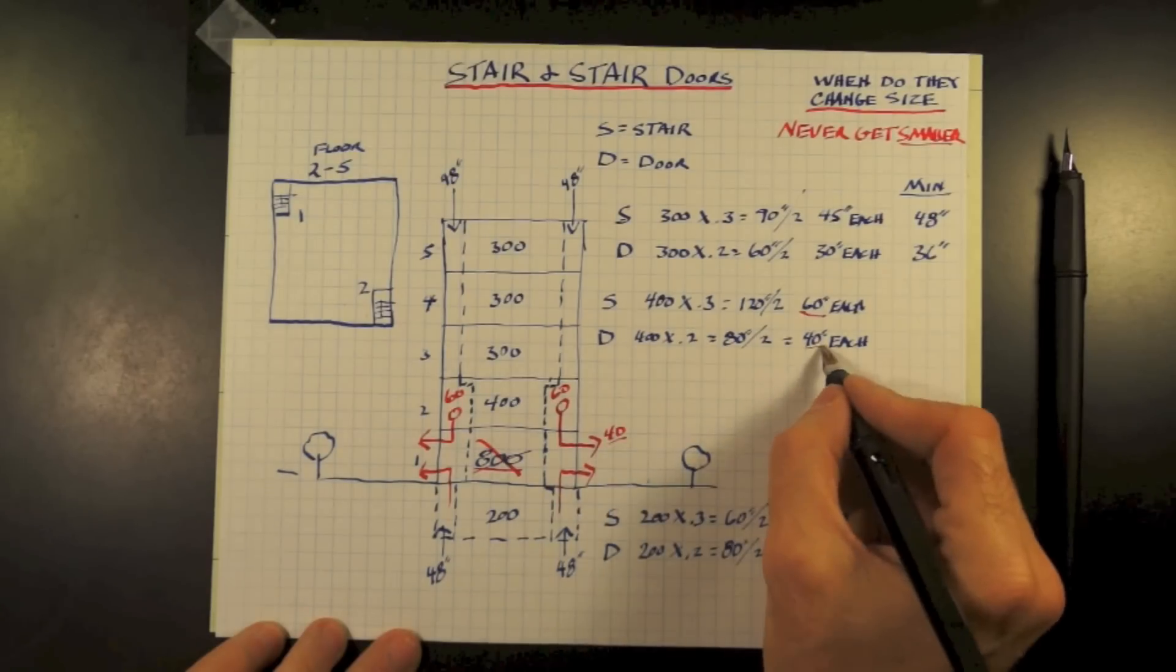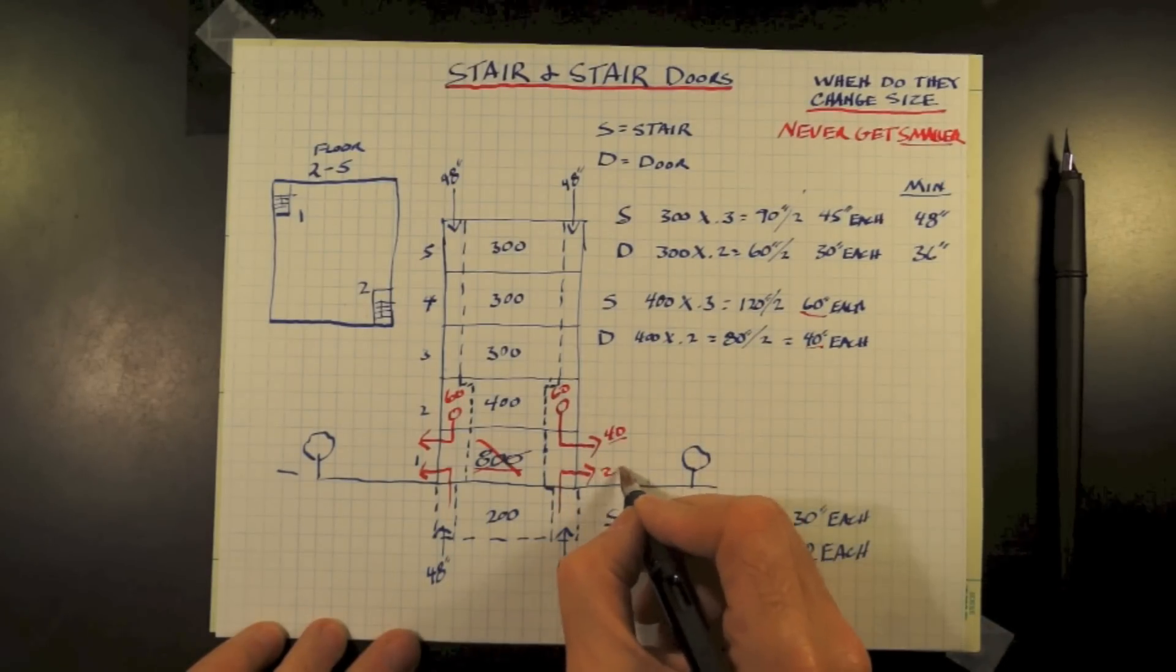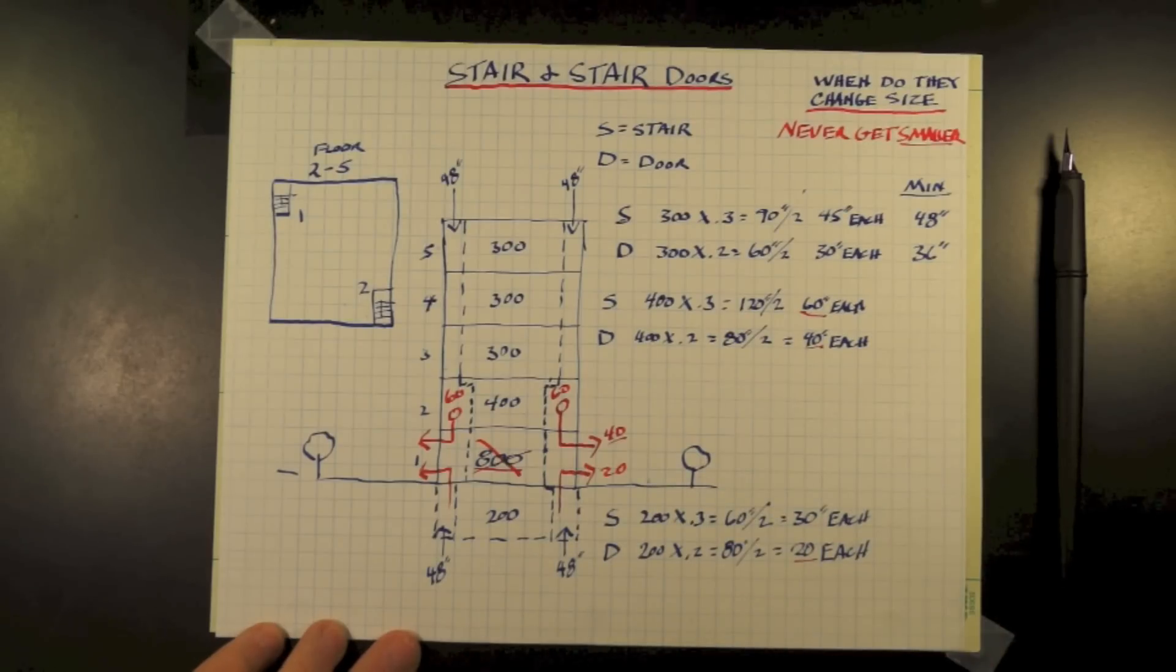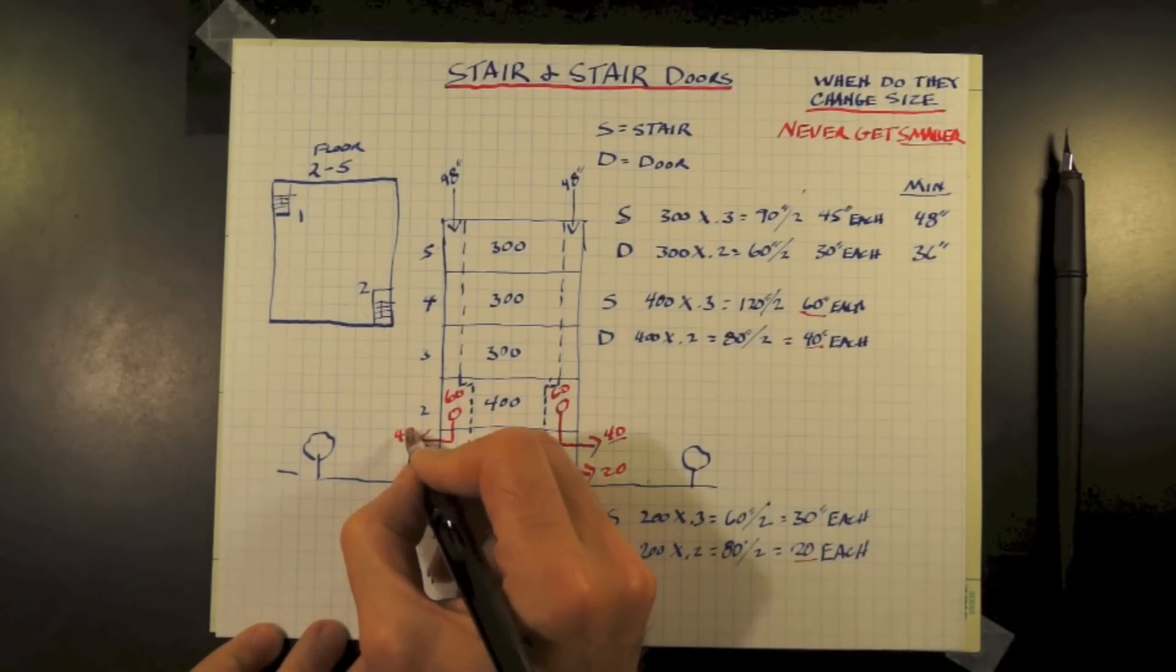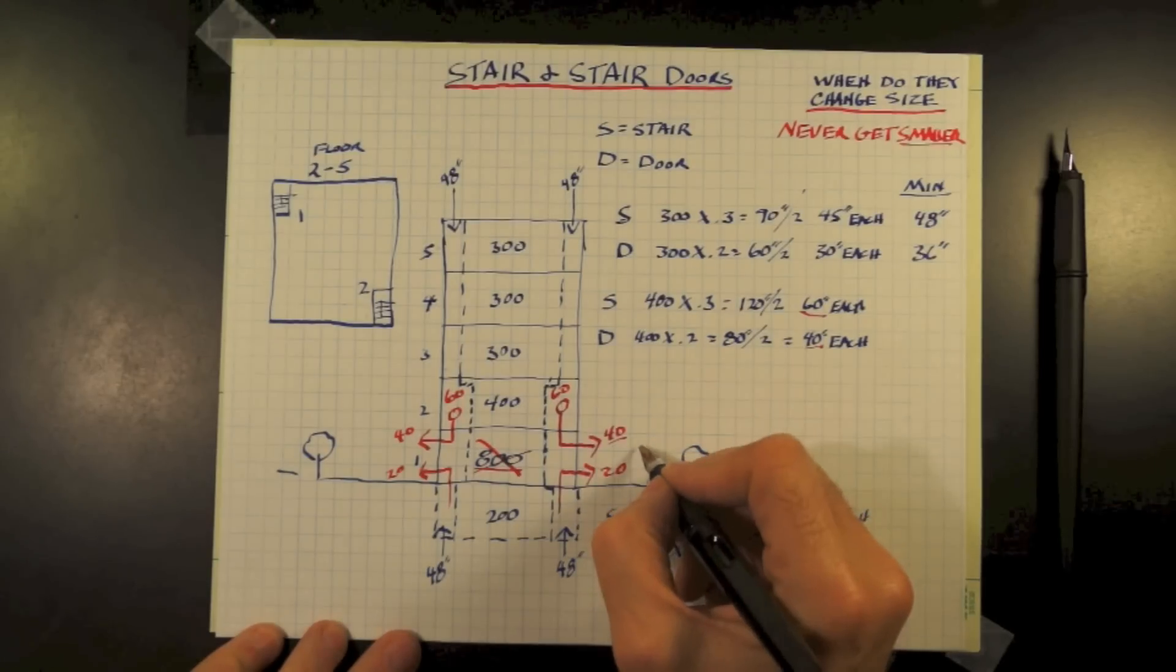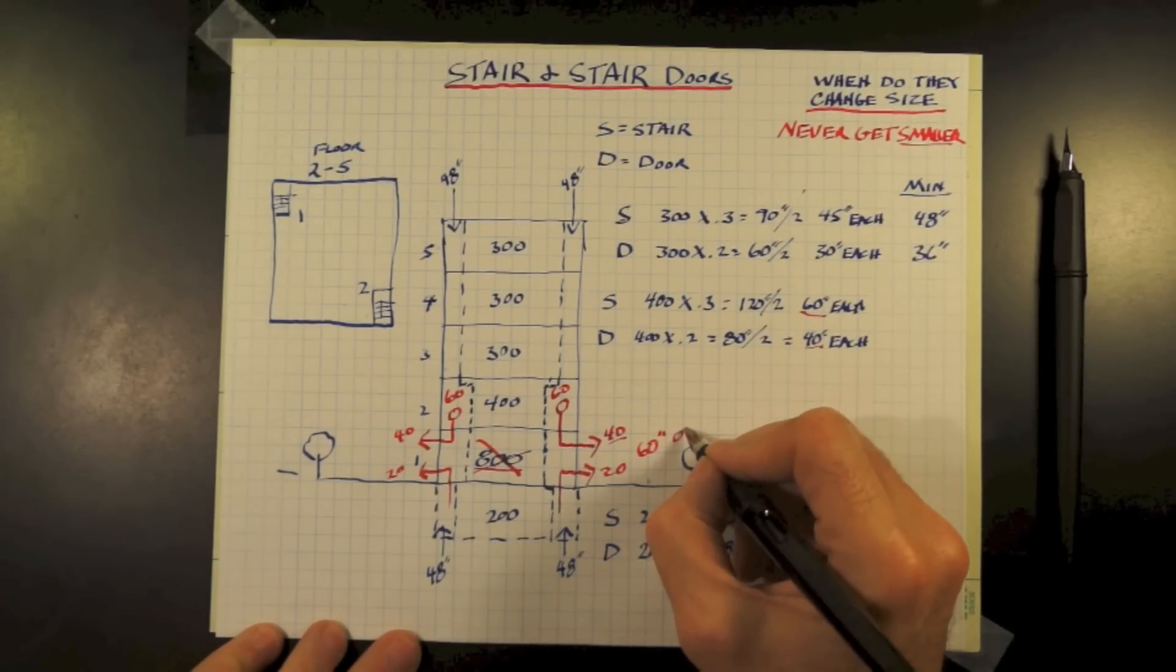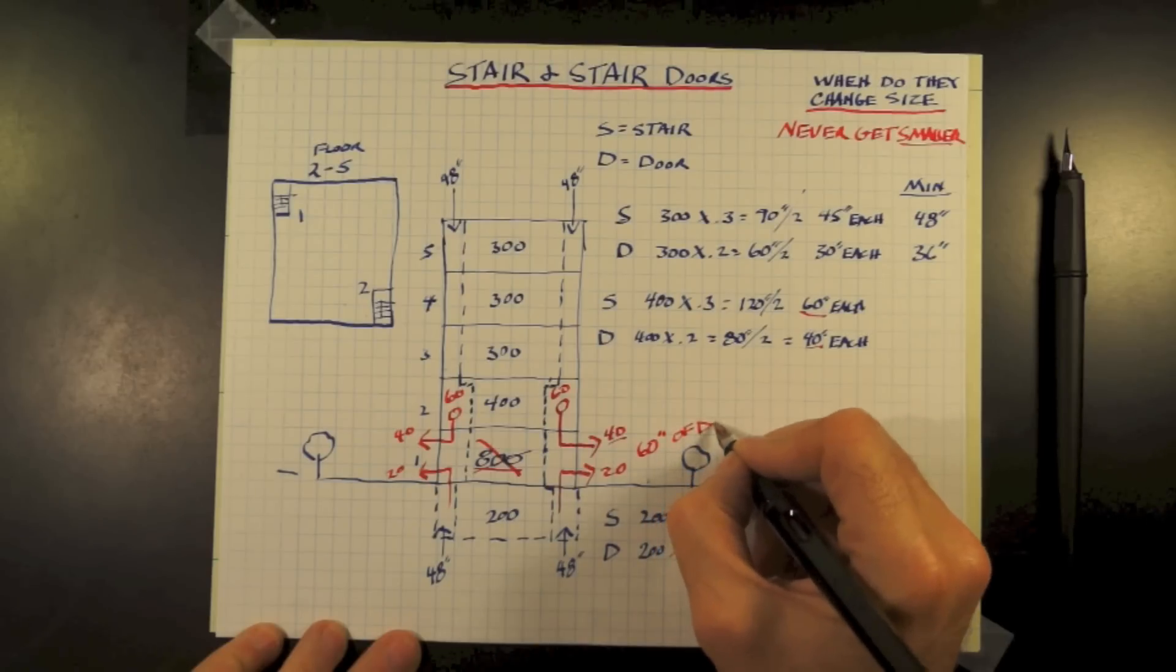So from above, we need a door of 40 inches or greater. And from the basement, we need a door of 20 inches or greater. Will the 20 inches fit inside the 40? Yes. But that's not the way it works. The 400 people and the 200 people will be leaving the building at exactly the same time, at least as understood by the code.